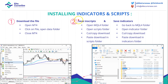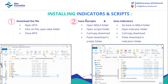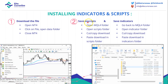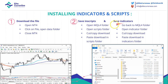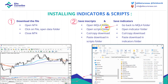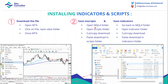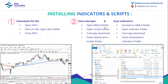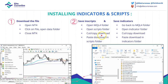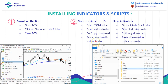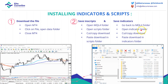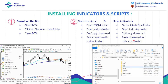Part two is basically saving what you just downloaded. That depends on whether it's a script or an indicator. In both cases, you want to open the MQL4 folder. For scripts, open the Scripts folder, then copy the download and paste it into the Scripts folder. With indicators, you go to the Indicators folder and do the same actions. Pretty straightforward.